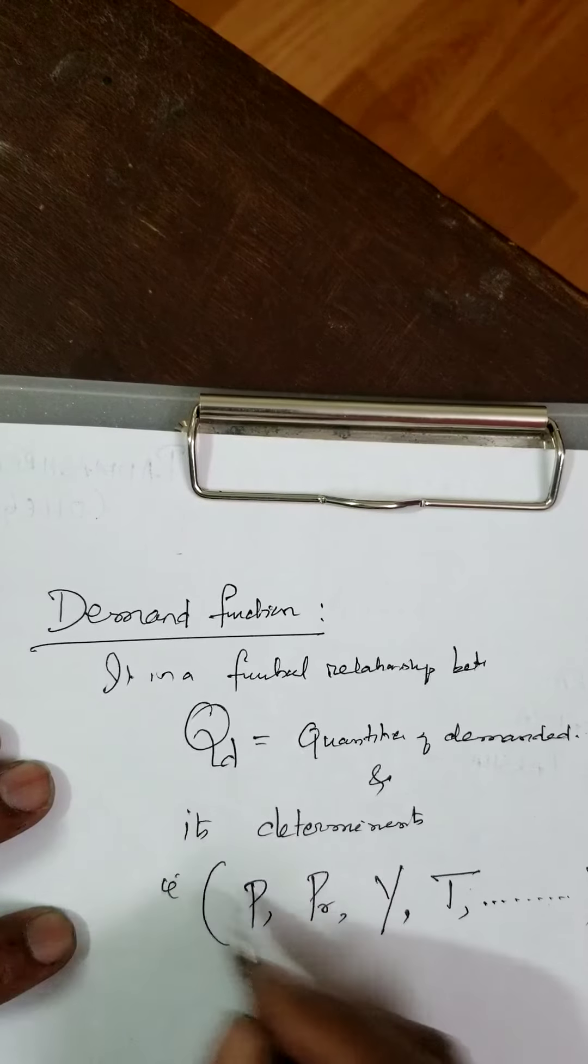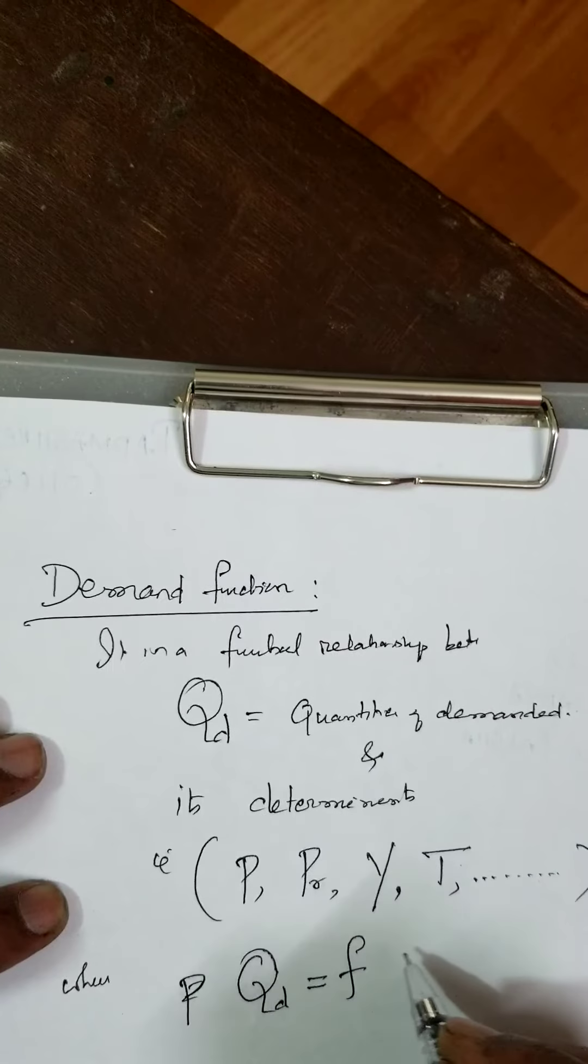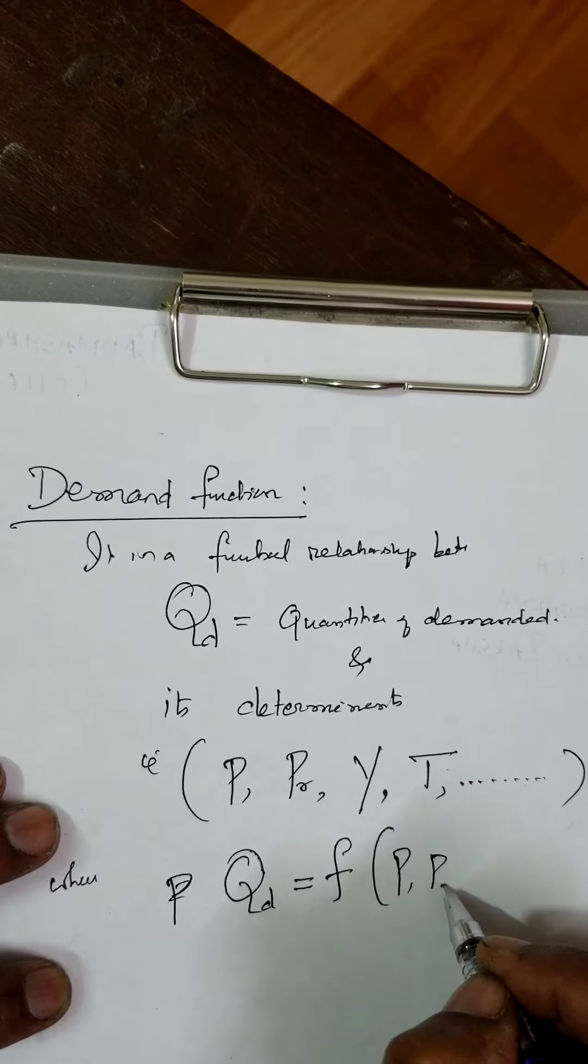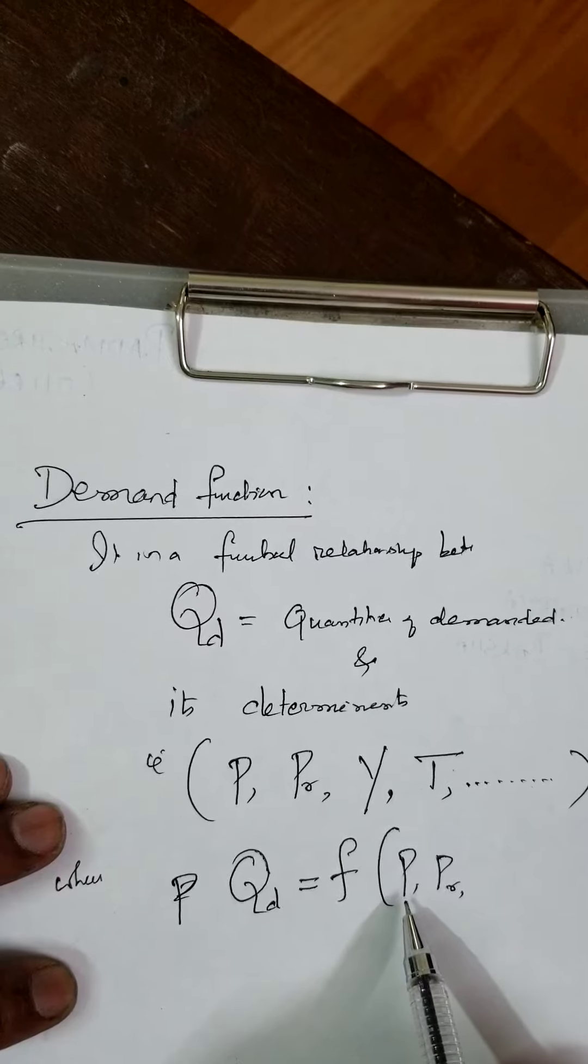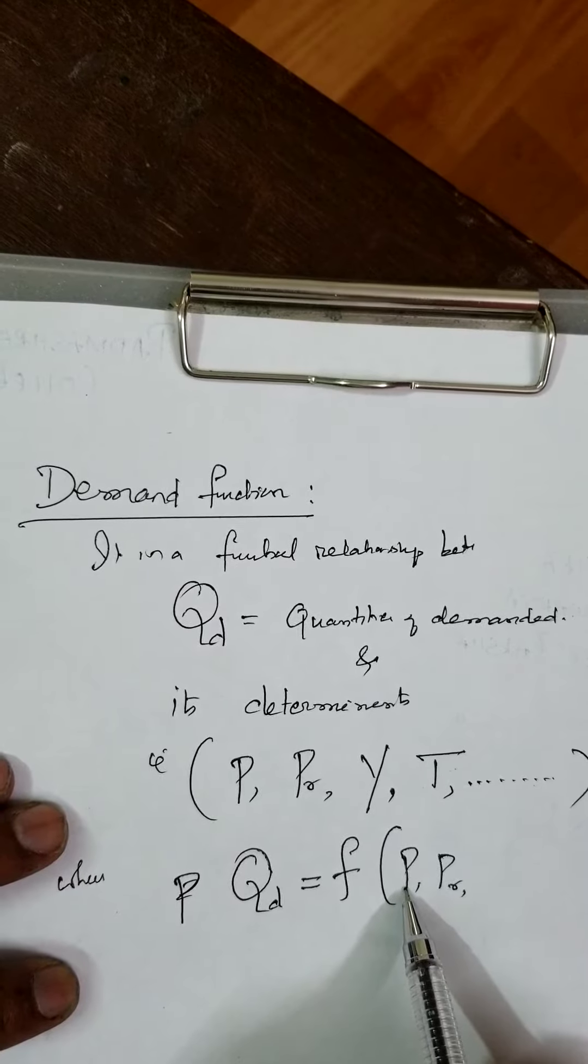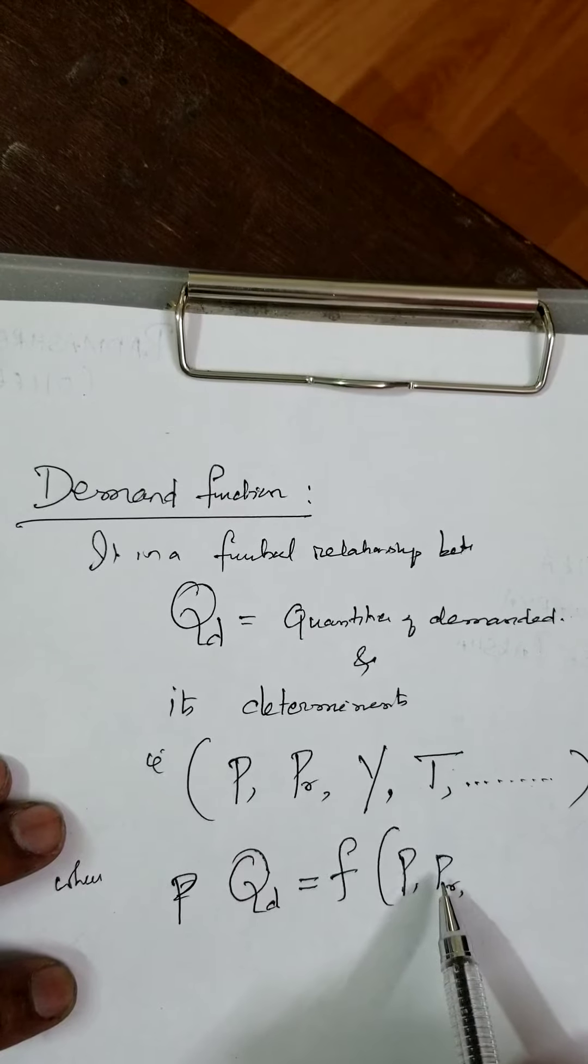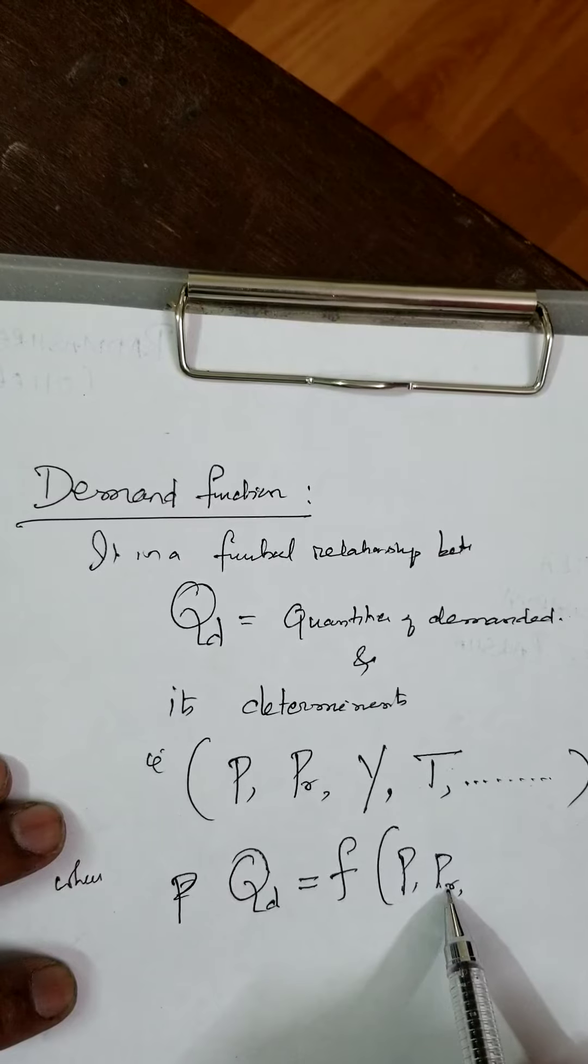That is what you can write: quantity demanded is the function of price, price of related or substitutes. Like food - suppose the price of food and packaging, packing, cover, bag - all this is called price related or substitutes.